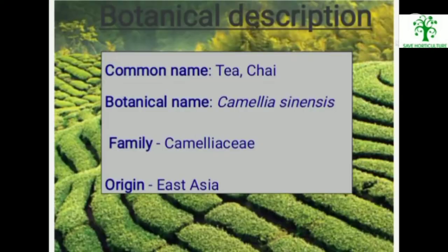Botanical Description. Common name: Tea and Chai. Botanical name: Camellia sinensis. Family: Theaceae. Origin: East Asia.